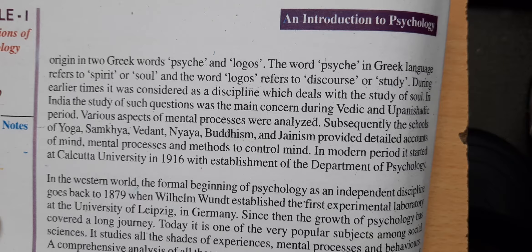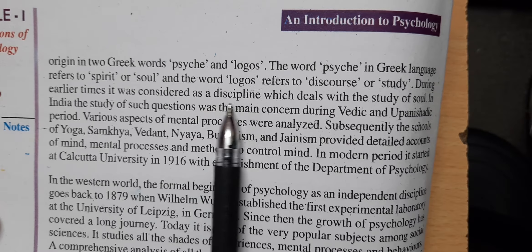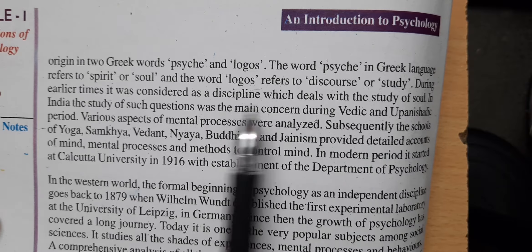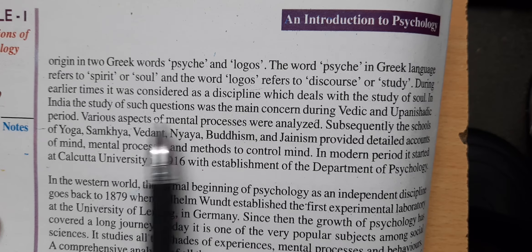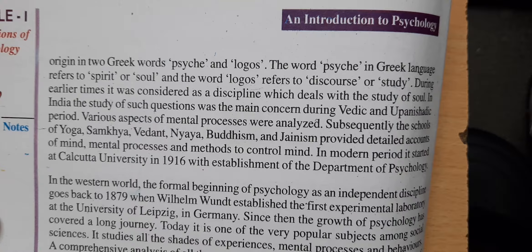Psychology is derived from the Greek words 'psyche' and 'logos.' Psyche refers to spirit or soul and logos refers to discourse or study. We study a person's mind, physical presence, and behavior. During early times it was considered a discipline dealing with the study of soul. In India, during the Vedic and Upanishadic period, various aspects of mental processes were analyzed in schools like Yoga, Buddhism, and Jainism, which took the initiative to understand the human mind.